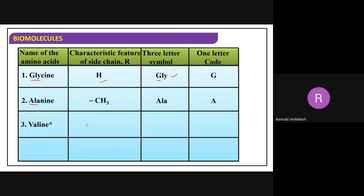Third is valine - R is equal to CH(CH3)2, an iso group. Take VAL as the first three letters, and the one-letter code is V. Fourth is leucine - compared to valine, it has one extra CH2 group, one extra carbon.